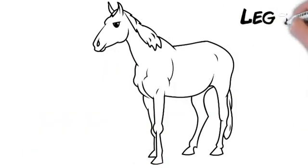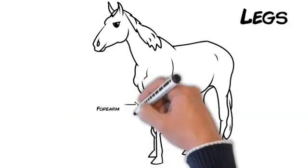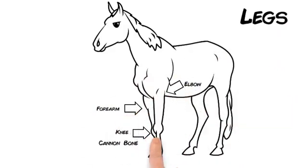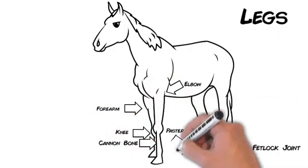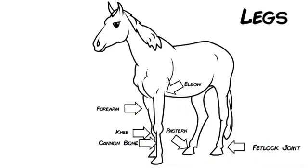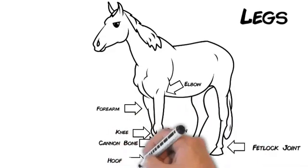Last we will discuss the legs. This includes the forearm, knee, elbow, cannon bone, fetlock joint, which is the bump above the hoof, pastern, the place between the fetlock joint and the hoof, hoof, gaskin, and hock.